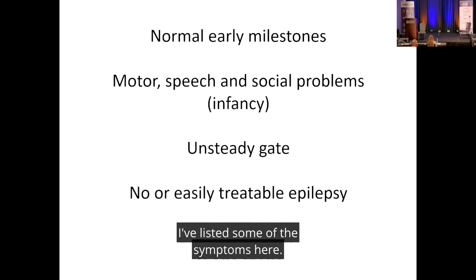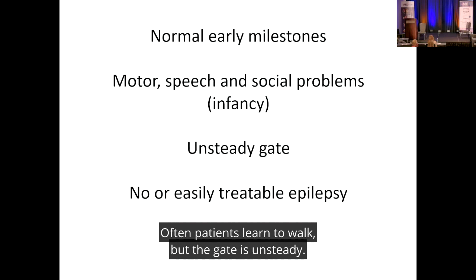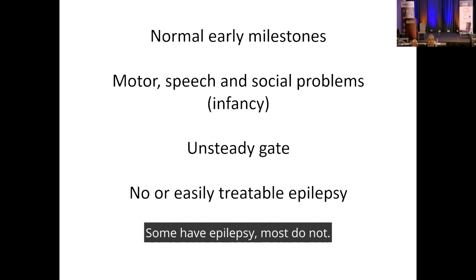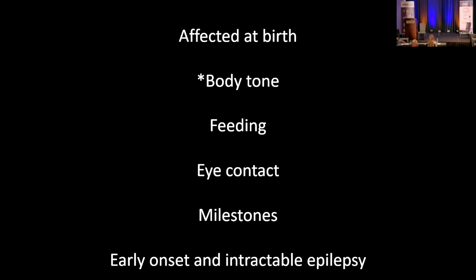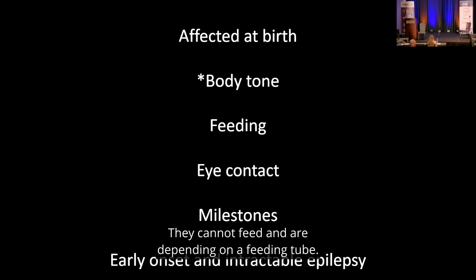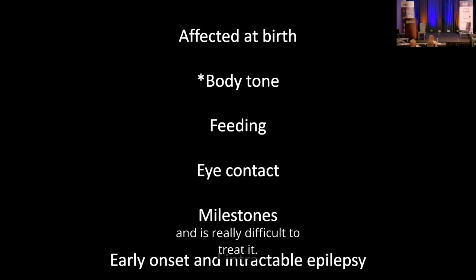At the mild end of the spectrum, early milestones are often normal, but around infancy developmental problems begin to emerge. Patients often learn to walk but with an unsteady gait. Some have epilepsy, most do not, and seizures in this group are relatively easy to treat — patients often become seizure-free. At the severe end, patients are affected immediately at birth — they are very stiff and cannot relax their muscles, cannot feed and require a feeding tube, have no meaningful eye contact, do not develop meaningfully, and have early-onset epilepsy that is very difficult to treat.